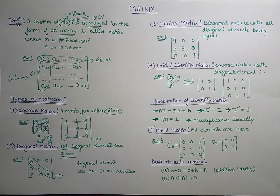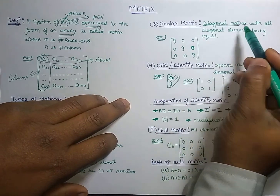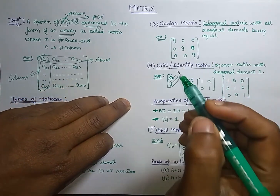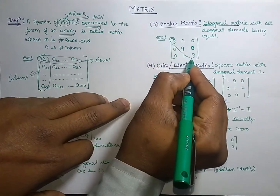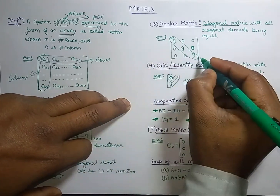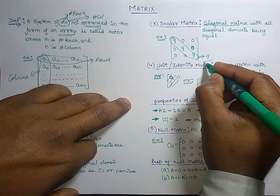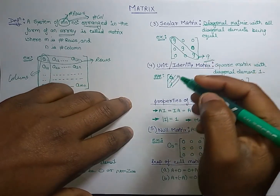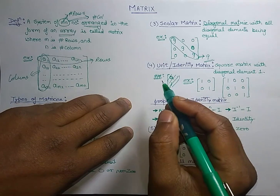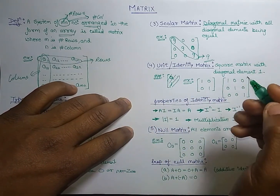The third type is the scalar matrix. The scalar matrix is a diagonal matrix in which each diagonal element is equal. You can see in this example that all diagonal elements are nine, so it is a scalar matrix. Next is the identity matrix — a square diagonal matrix with diagonal elements equal to one.